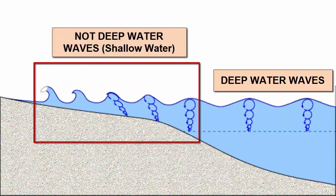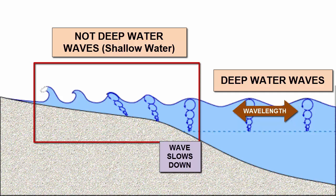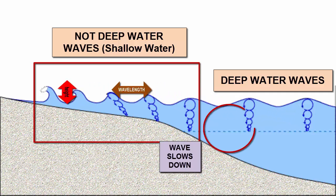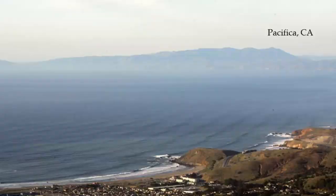Once a wave enters water that is shallower than its wave base, it now transfers its orbital motion to the rock or sediment on the seafloor. That transfer of energy will pick up and move sediment, erode rock, and generally cause a frictional slowing of the base of the wave. The top of the wave might still be moving at its original speed, but the base is slowing down. This causes waves to bunch up, their wavelengths decrease, grow taller, and have their circular orbits squashed into elliptical orbits. Note: while height increases and wavelength and speed both decrease as a wave approaches shore, the period stays the same.